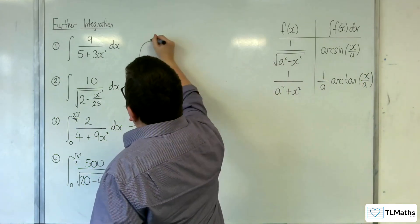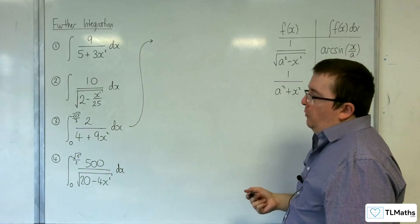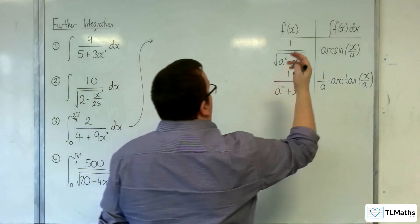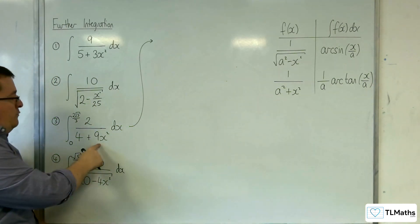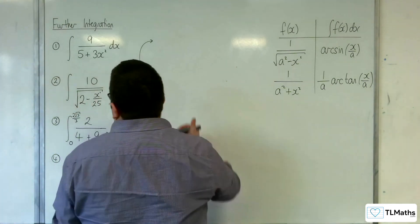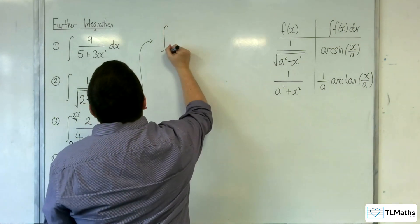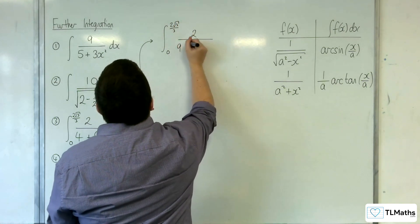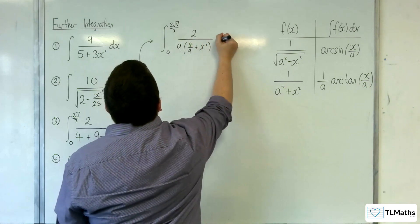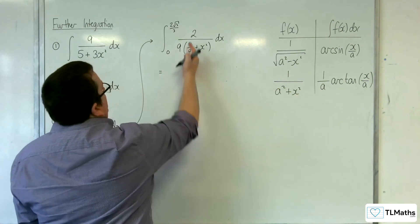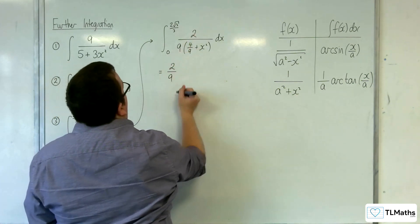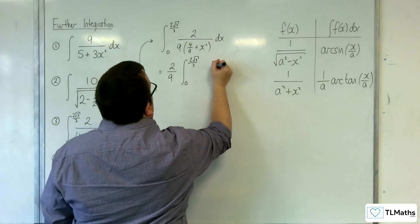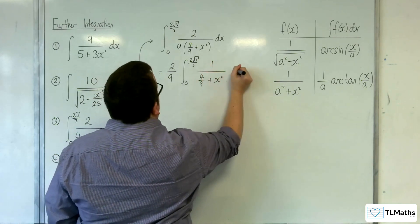Number 3. We've got the integral of 2 over 4 plus 9x squared between 0 and 2 root 3 over 3. This is clearly going to be of the form arc tan, but we need to get rid of the 9 in front of the x squared. So I'm going to factor 9 out of the denominator first. We've got the integral between 0 and 2 root 3 over 3 of 2 over 9 lots of 4 ninths plus x squared dx. Factoring 2 ninths outside of the integral: 2 ninths of the integral between 0 and 2 root 3 over 3 of 1 over 4 ninths plus x squared dx.